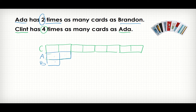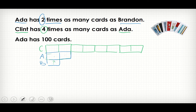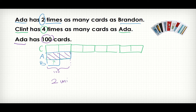Now my model is almost complete. I just need to put in some numbers to understand what one unit is. Now I have another information. Ada has 100 cards, so I know that this is 100. From my model, I understand that two units is equal to 100 cards.